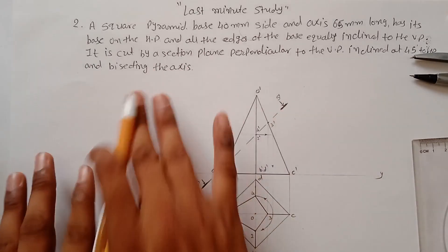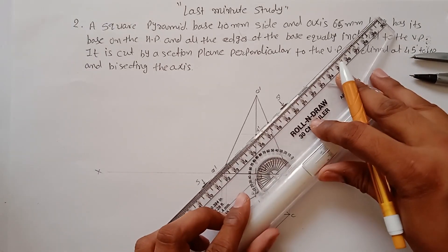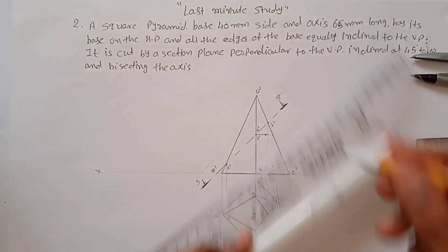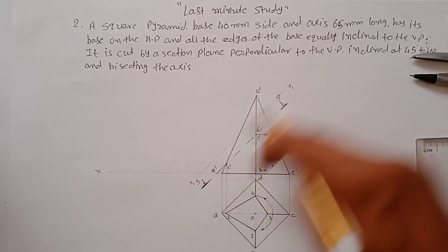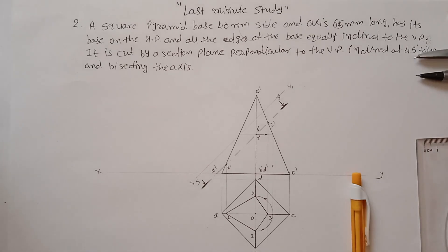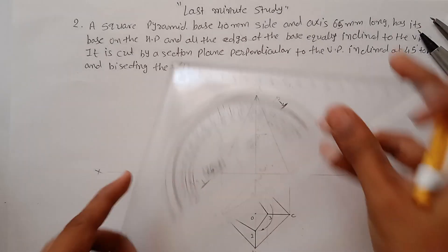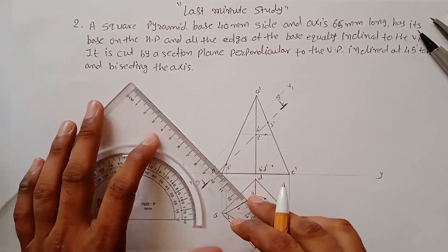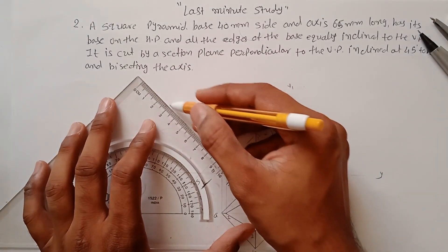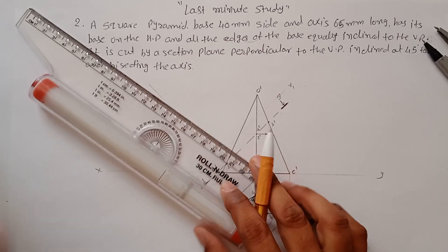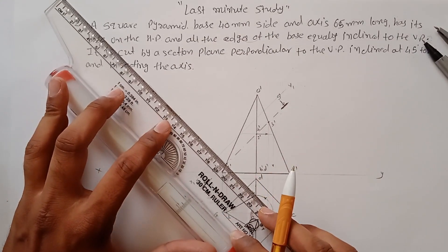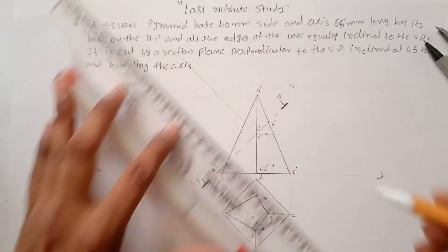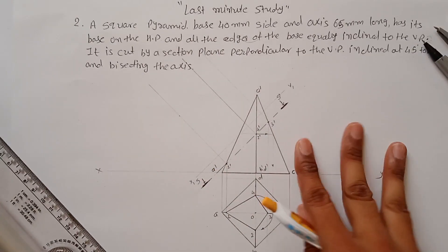Now transfer all the points from X1Y1 to find the true shape. The X1Y1 line should be drawn outside the front view solid, but due to limited space I'll draw it close to the sectional plane. Draw projections perpendicularly from each point on the section line, and draw parallel lines from each corner.